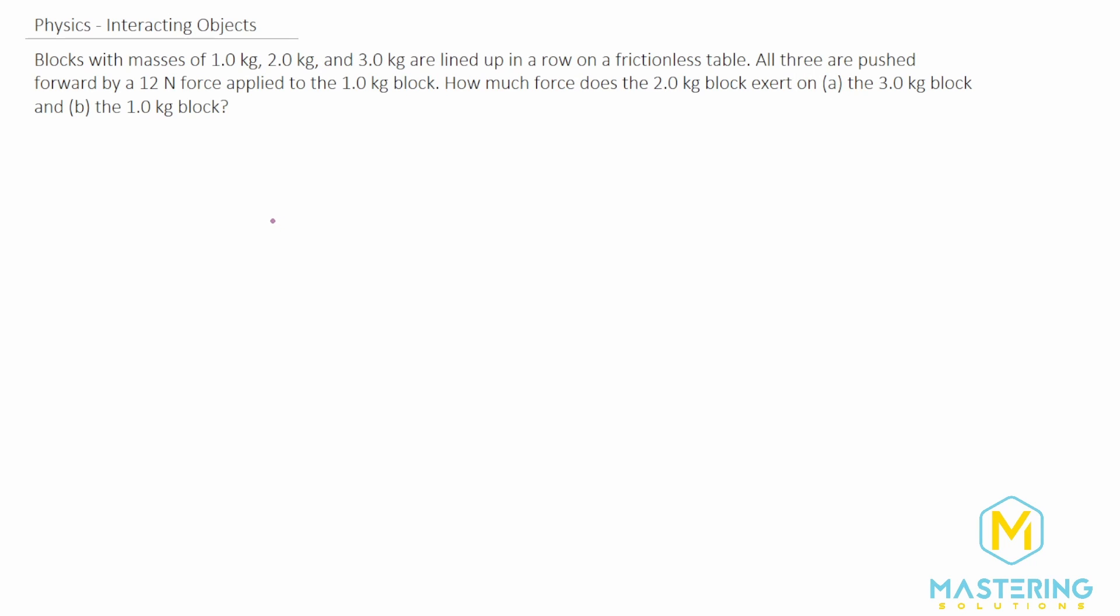Welcome to Mastering Solutions. This interacting objects question says that blocks with masses of 1, 2, and 3 kilograms are lined up in a row on a frictionless table, and all three are pushed forward by a 12-newton force applied to the 1-kilogram block.